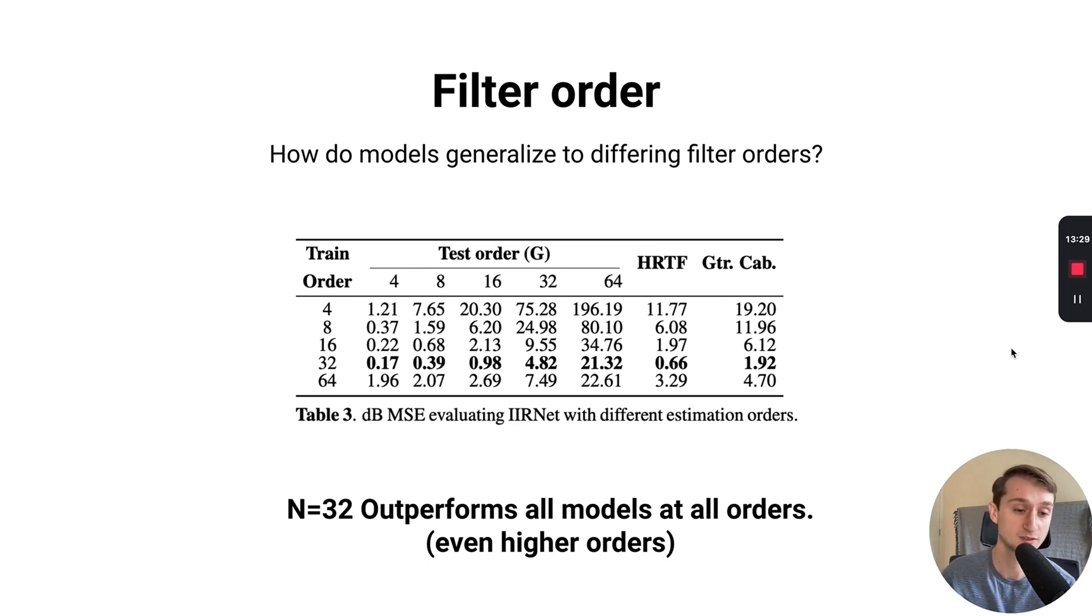While this is somewhat surprising, we hypothesized that this happened because we found difficulty in training stably anything higher than a 32nd order model. The 64th order model, even though it saw these higher order filters, had more difficulty in training stably, which led to worse performance. This shows some good results that even training at a fixed order means that we can go higher or lower and still get decent performance, although maybe not as good as training at that order.